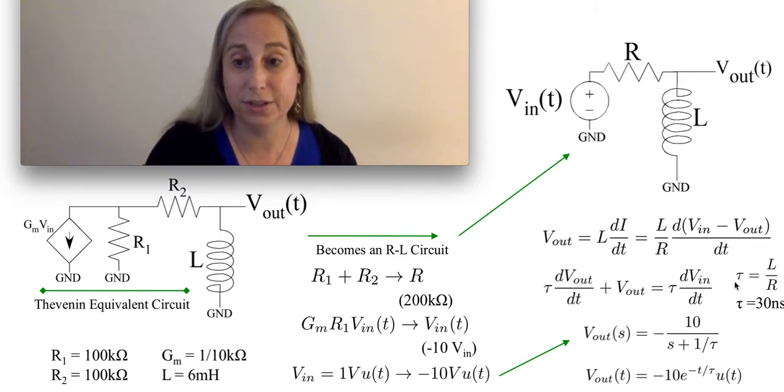The tau is the L over R, which in this case is 30 nanoseconds. And so that gives me a pretty canonical structure.